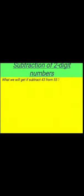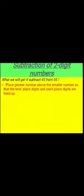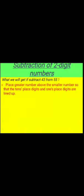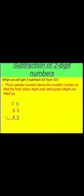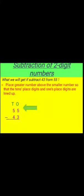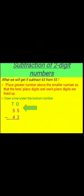The first is: place the greater number above the smaller number so that the tens place digits and ones place digits are lined up. The tens and ones columns: 55 and 43. After this, we will draw a line under the bottom number.